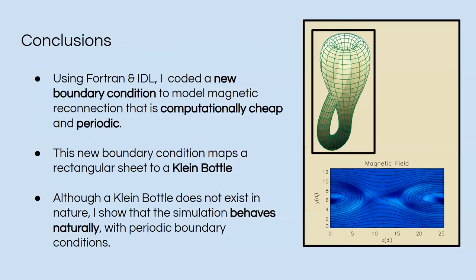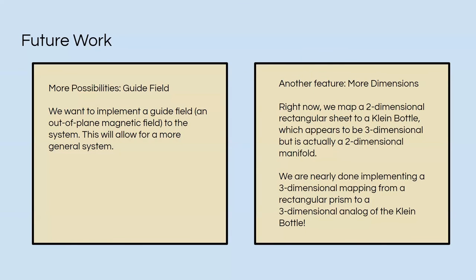So here are my conclusions. Using Fortran and IDL, I coded a new boundary condition to model magnetic reconnection that is both computationally cheap and periodic. It topologically maps a rectangular sheet to a Klein bottle. And although a Klein bottle does not exist in nature, I show that my simulation can model natural conditions with periodicity.